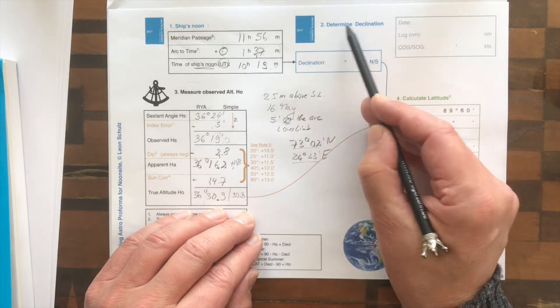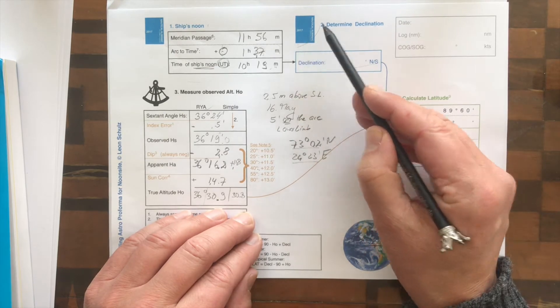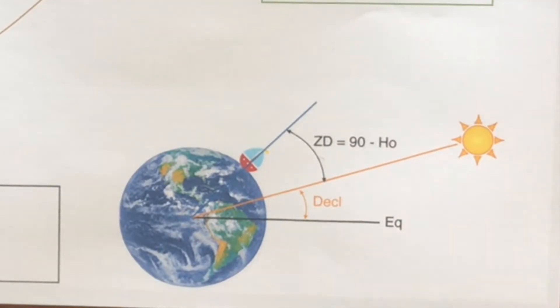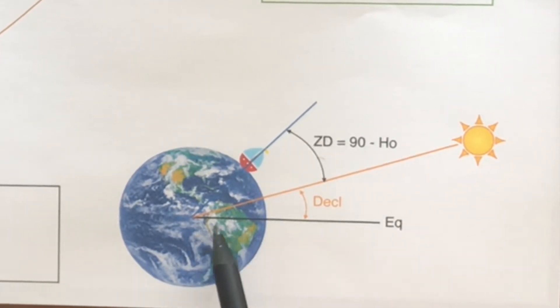The second thing is to get the declination, and that we also get from the book. Why do we need the declination? Because down here I have the little drawing, which is always good as a memory, and you can redraw it depending on if the sun has a southern declination, you are in the southern hemisphere, or whatever. So all you do is you want to get your latitude, which is the angle between the equator and your latitude.